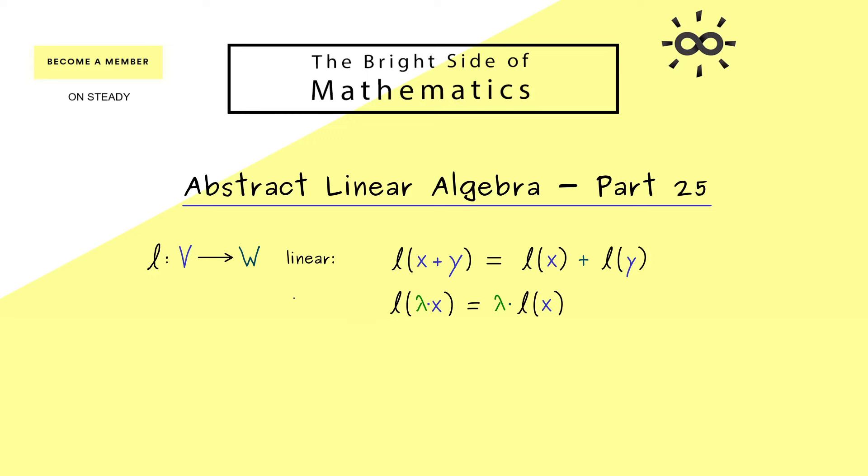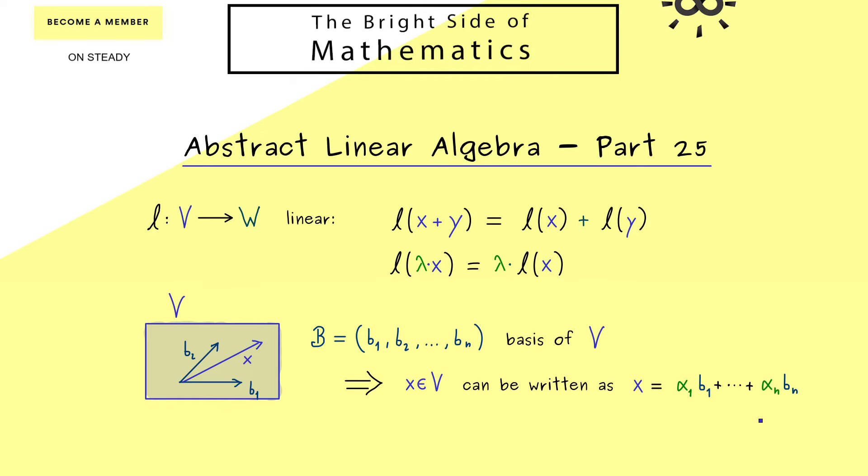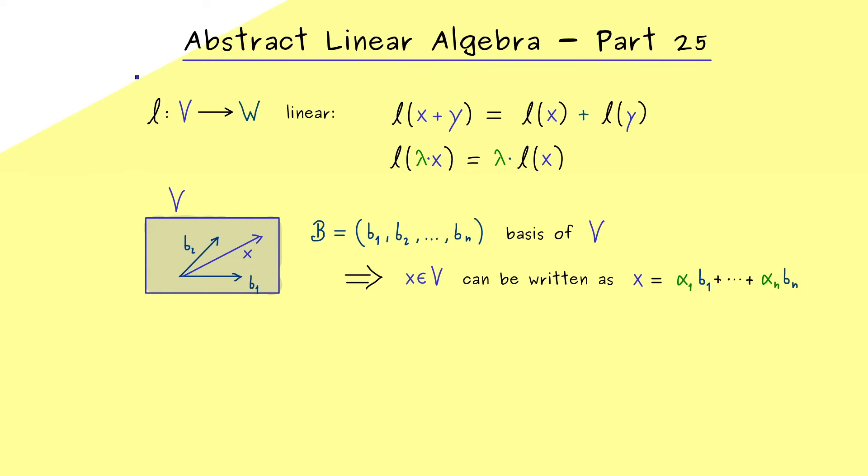But now the conclusion of these two properties is that we only need to know what L does on a basis of V. Please recall, a basis is a linearly independent set that spans the whole vector space. And as I've already mentioned, we will only consider the case of a finite dimensional vector space. This means we can find a basis with finitely many elements. And now by definition, any vector x in V can be written as a unique linear combination.